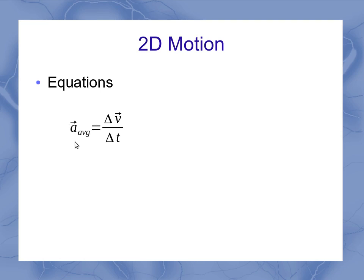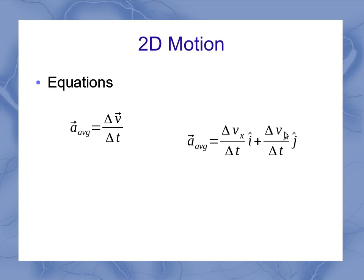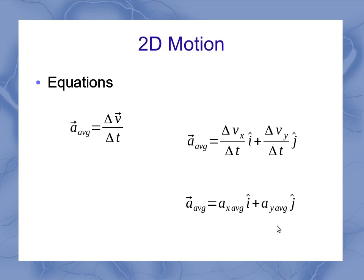Average acceleration works the same way, where now I'm using the change in the velocity vector. So I've got a change in the vx component and a change in the vy component, giving me my two components for the average acceleration. That means delta vx over delta t — the change in the horizontal velocity divided by the change in time — is my x component of the average acceleration. And the change in the vertical velocity over the change in time gives me the y component of the average acceleration.